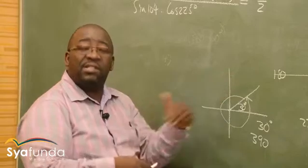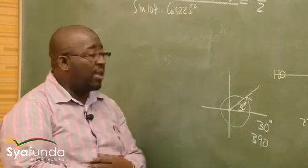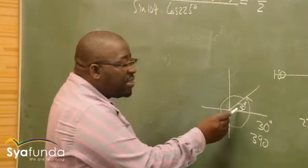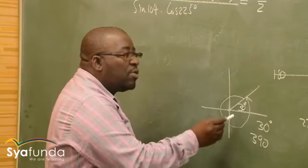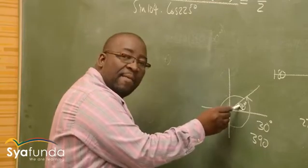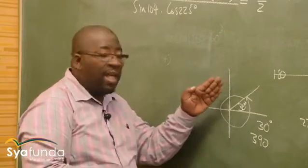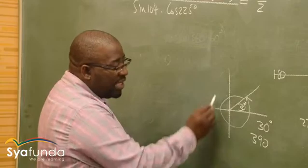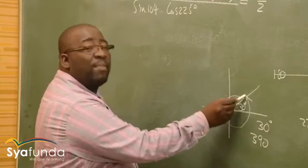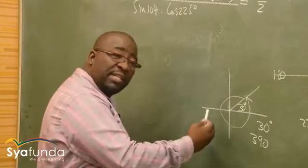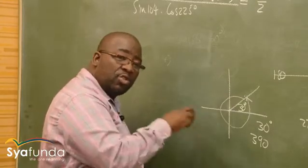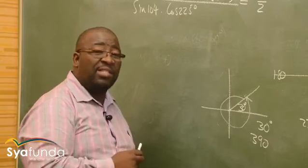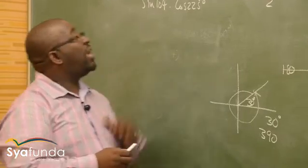But a general solution will be 30 degrees plus n times 360. So in other words, if we add 360, we change the angle and we shift the position. At the same time, when we subtract 360, I will end up on the same position. So adding or subtracting 360 does not shift the position.